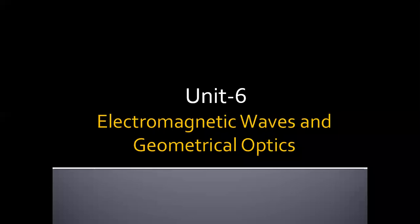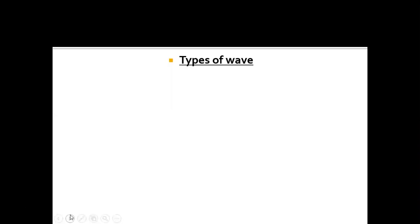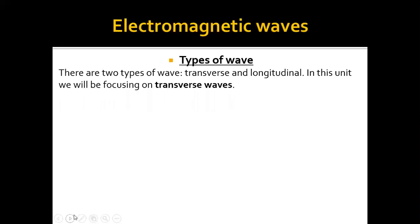Electromagnetic waves and geometrical optics — this is going to be the first part of Unit 6. Here we are going to learn about waves and their characteristics. First, let's begin with types of waves. There are two types: the first one is transverse waves, and the second one is longitudinal waves. Generally, we are going to focus on transverse waves.